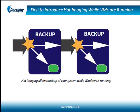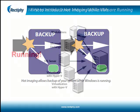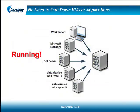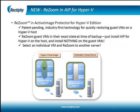Rectify's Active Image Protector was the first to introduce hot imaging, which takes a snapshot of volumes while Windows and the applications are still running, so that a hard drive image file is created without bringing the system to a halt. With Active Image Protector, the user does not have to shut down the system in order to back up the operating system.